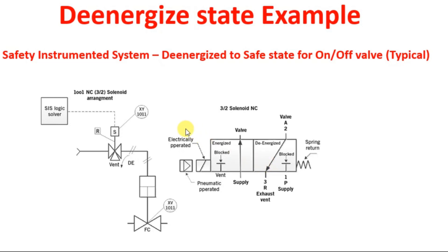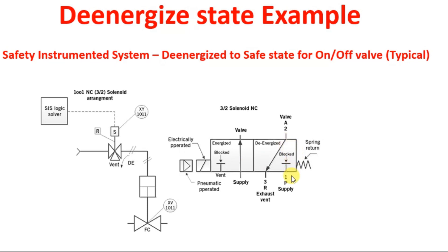The main valve part is known as an actuator, and this actuator is being driven using instrument air. The instrument air line shows air being sent into the actuator through the solenoid valve. Under normal operating conditions, when the solenoid power is energized during normal plant operation, the instrument air goes into the valve actuator body to keep it in the open position.